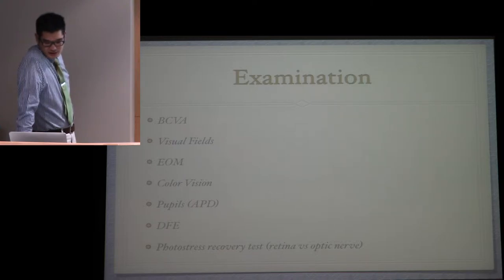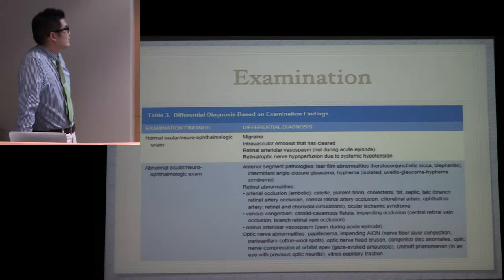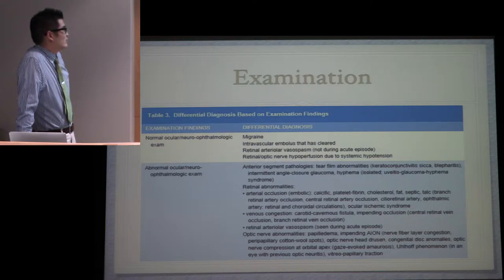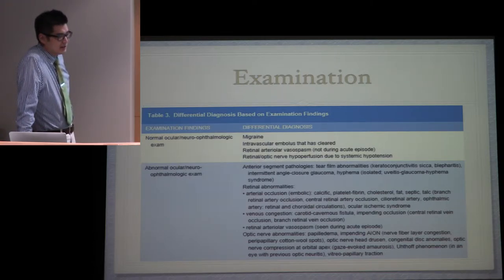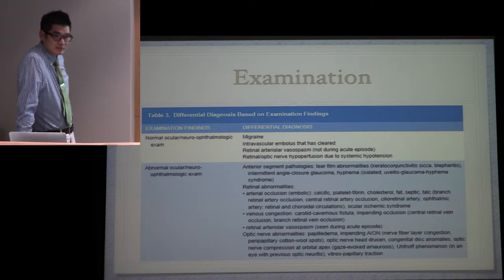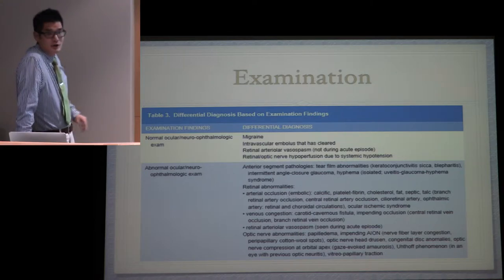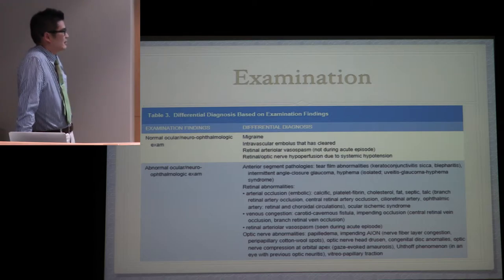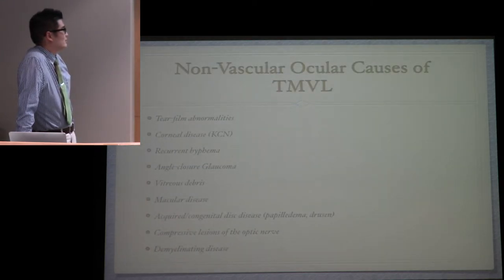Here's a good chart for differential depending on examination findings. If you have a normal ocular or neuro-ophthalmic exam, think migraine, intravascular embolus that's already cleared, retinal arterial vasospasm, or retinal optic nerve hypoperfusion due to systemic hypotension. With retinal vasospasm, if there's an acute episode and you actually look at the fundus, you can see retinal arterial constriction.